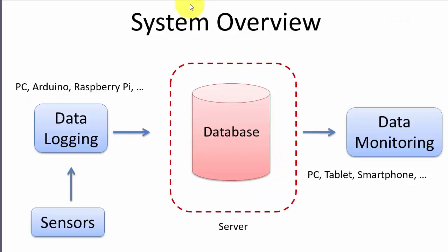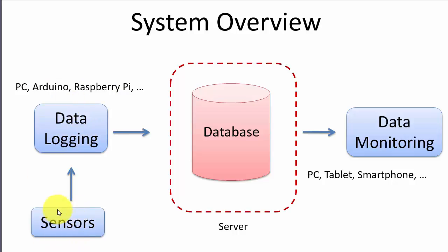Here you see a simple system overview. We have a server with the database and we have a data logging system. In general we could use a PC, Arduino, Raspberry Pi, etc. in order to create this system and then log or retrieve values from one or more sensors and store these values in the cloud in a database. Then we can have another application — a data monitoring application.